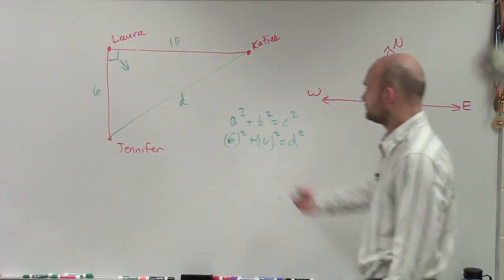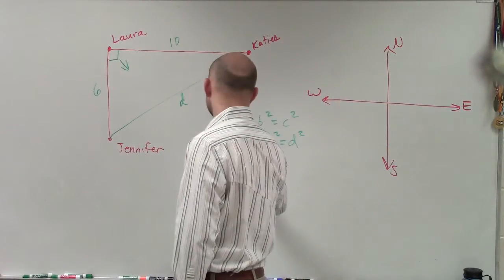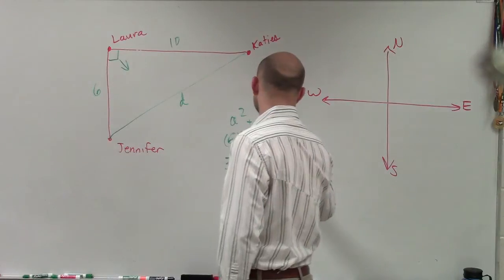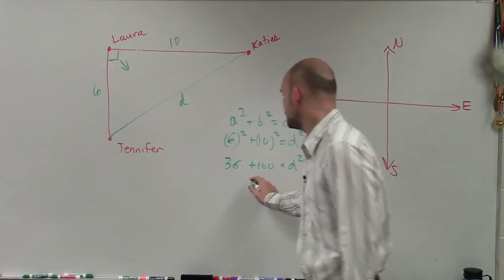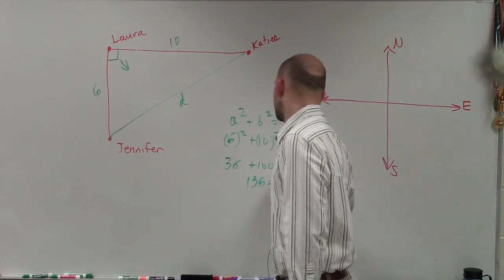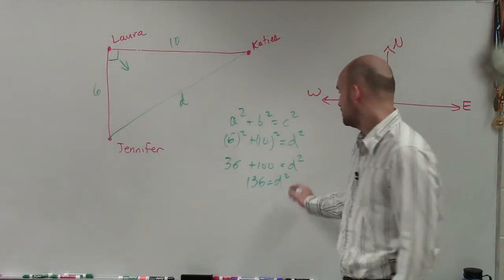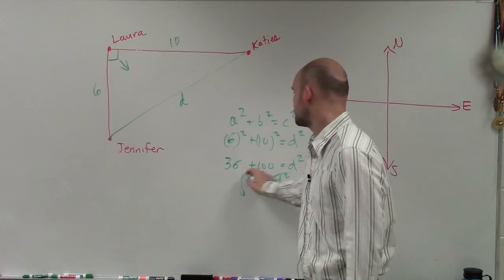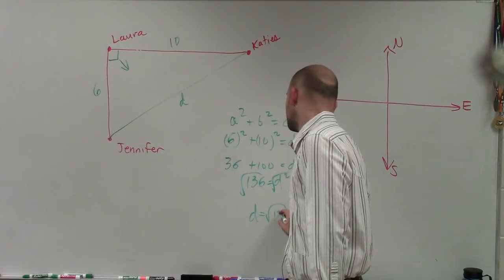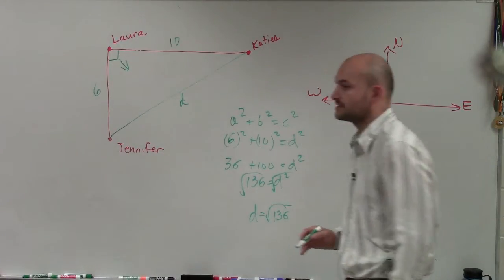So now, 6 squared is 36 plus 100 equals d squared. 136 equals d squared. Now, take the square root, take the square root. d equals the square root of 136.